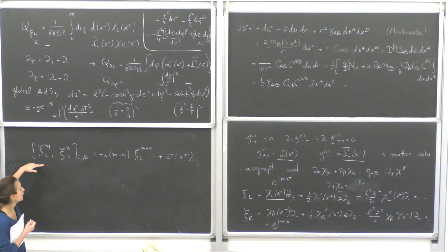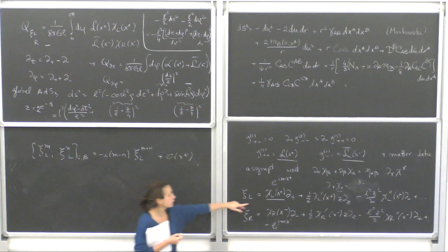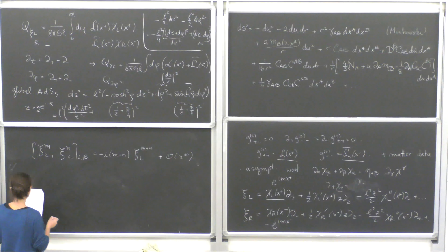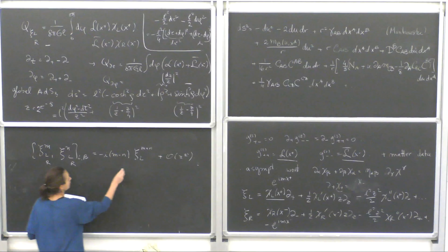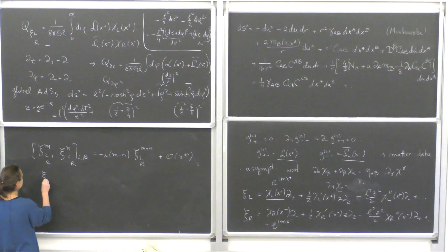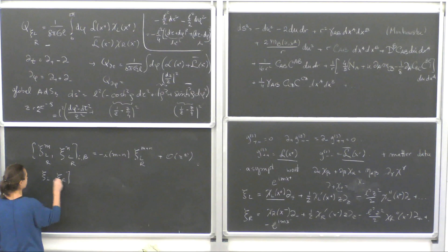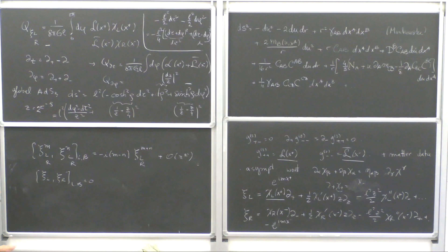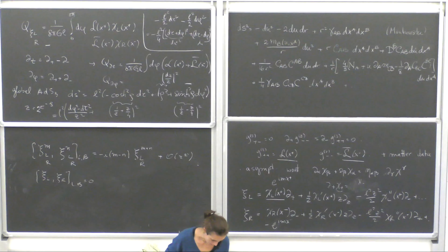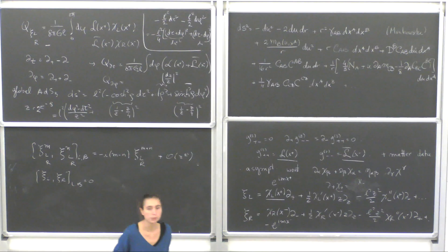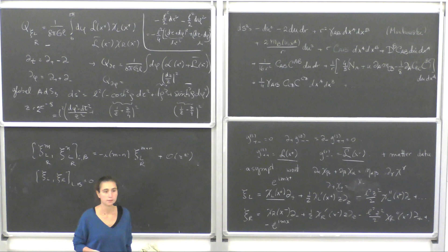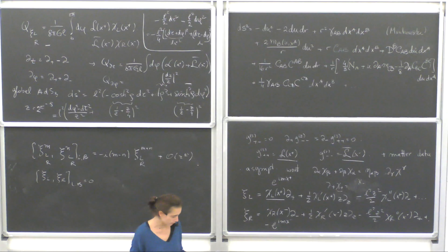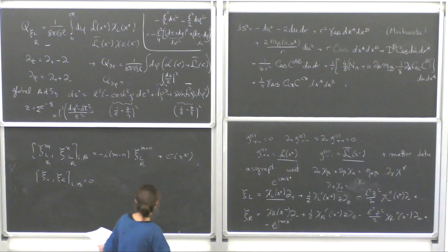This is just the asymptotic algebra — the Lie bracket asymptotically relates these vectors, with dot-dot-dot corrections still to handle. The same algebra holds for the right movers, and ξ^left commutes with ξ^right. This algebra is the Witt algebra, or centerless Virasoro.